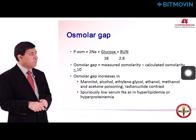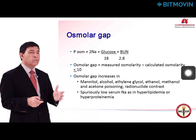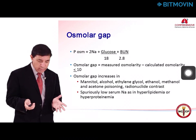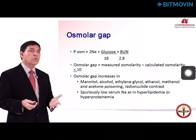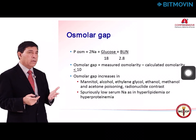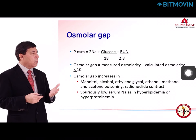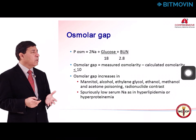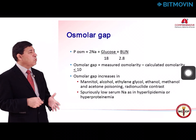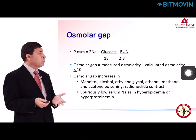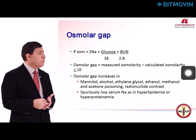The osmolar gap is calculated as: 2 × sodium + glucose/18 + BUN/2.8. The difference between the measured osmolality and the calculated value is normally less than 10. If the osmolar gap increases, it usually indicates metabolic acidosis caused by alcohol or methanol toxicity, or spuriously low sodium as seen in hyperlipidemia or hyperproteinemia.